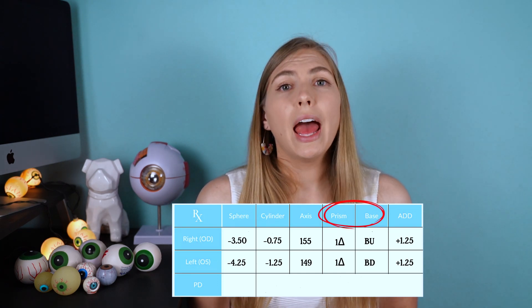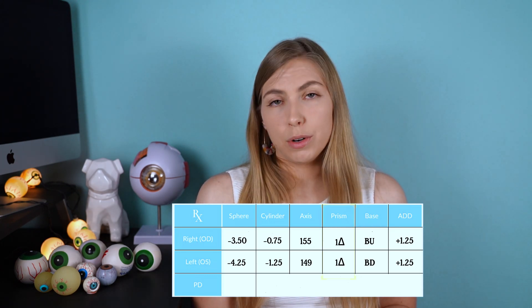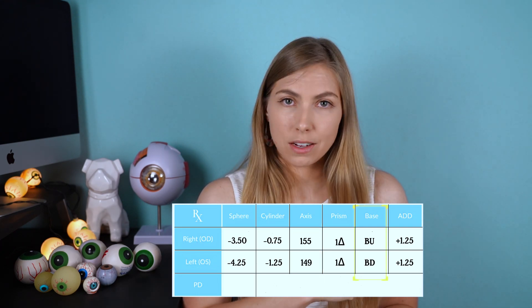It's not so common to see prism and base filled in on a glasses prescription, and that is because this is a way that you can correct for an eye turn. If there is anything written in the prism column, there has to be something written in the base column. Prisms look like this — and even though they're usually used in much smaller amounts, the job of prisms is to move an image so that the person looking through their glasses doesn't have to strain their eyes. For someone with an eye turn, the prism moves where the image in the world is so that it lands on their eye in the same place as the other eye, allowing the eyes to combine those two images to see binocularly and comfortably.